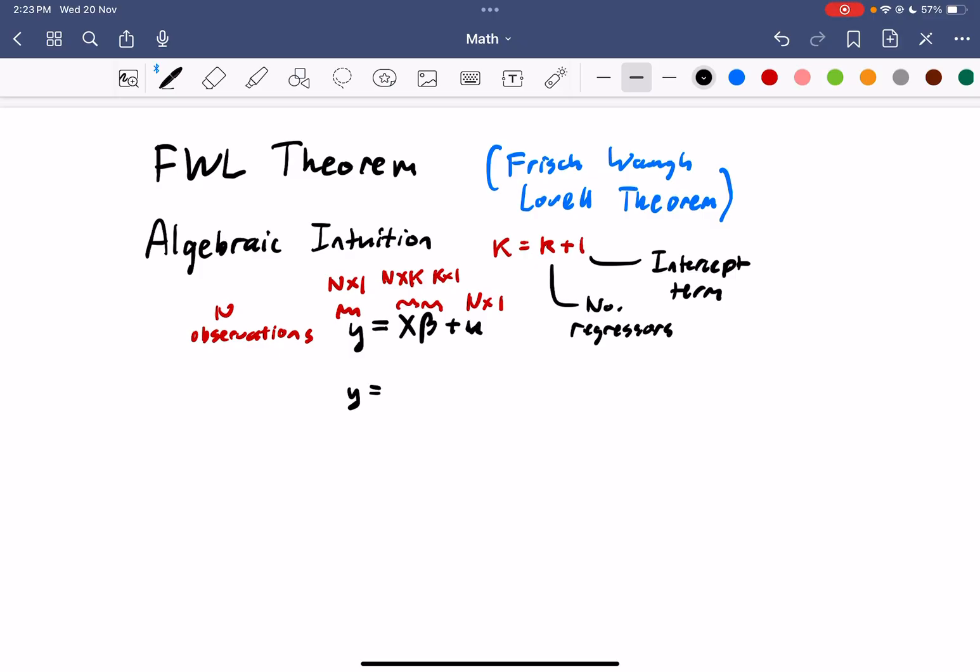So let's just say that we were to split this regression in the following manner. So we've got x, this matrix x, to be this matrix here, and this matrix here. So we've basically partitioned the matrix with beta 1 and beta 2 plus u.